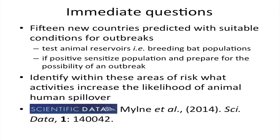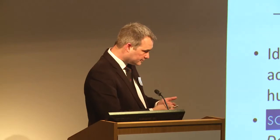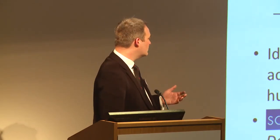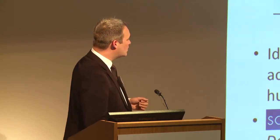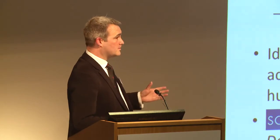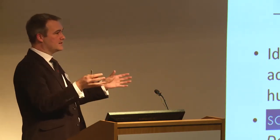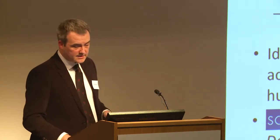Some of the immediate questions that arise once we have this niche are: testing for animal reservoirs, and if found, sensitizing populations and health systems for the realistic impact should it occur. What we haven't done yet is look at environmental covariates in more detail — particularly how something may have changed ecologically in a certain location to change the likelihood of human spillover. All the information we have produced is available in a publication, including point indices and best estimates for spread.